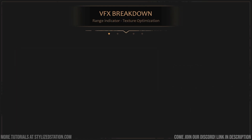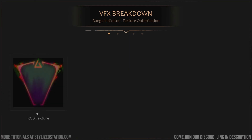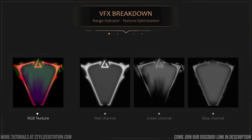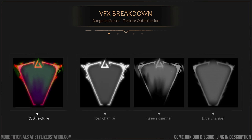One easy thing to do when it comes to texture optimization is to actually group textures. With only one RGB texture, you actually have three usable grayscale textures. For the price of just one texture call, we can have up to four different textures using the red, green, blue, and alpha channels. It's simple and very effective.